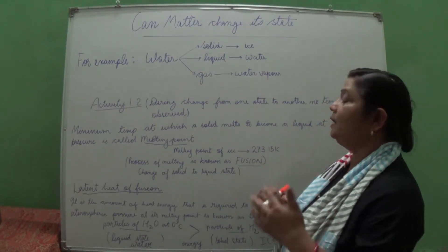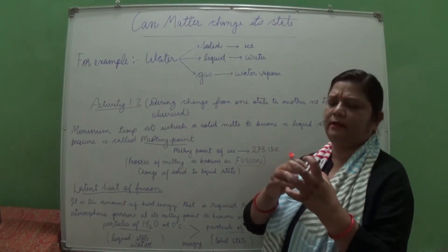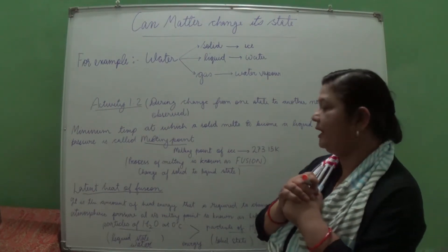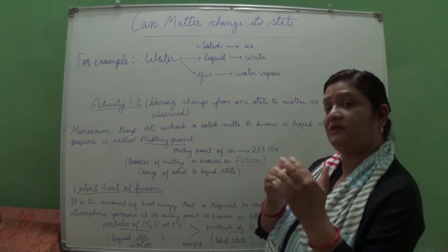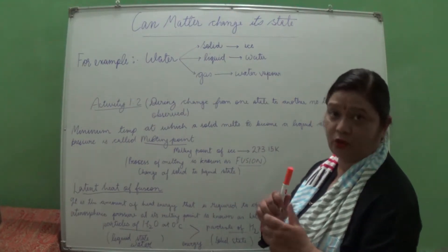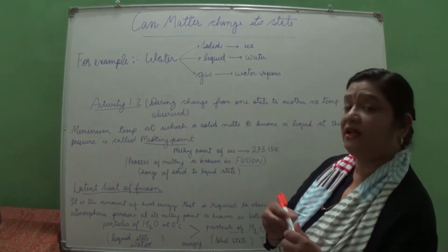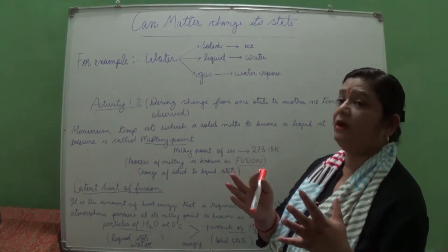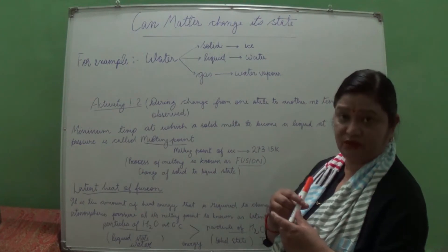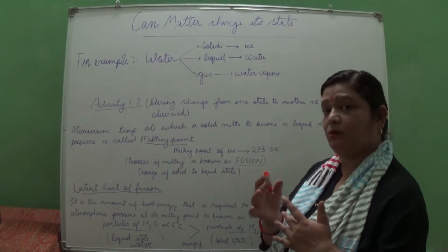The temperature of the thermometer did not change because some energy has been used to convert the solid form into the liquid form of water. Here a word comes: 'latent.' Latent means hidden. We cannot see where the energy is being utilized — the heat energy is being utilized in the hidden form. The word latent means hidden.